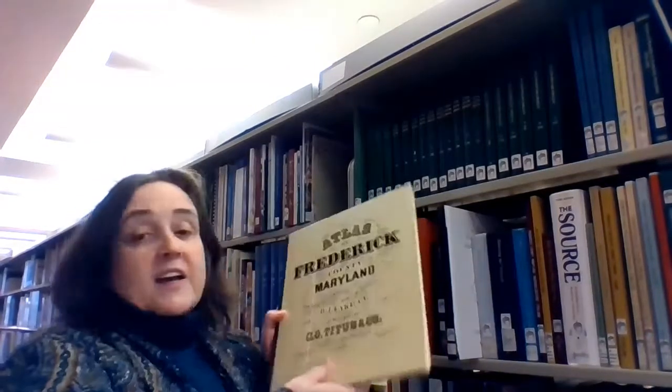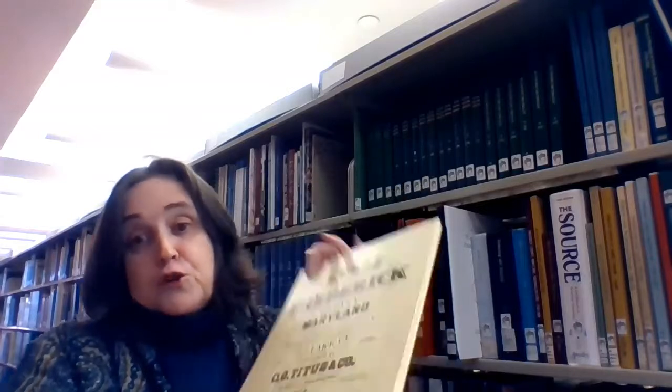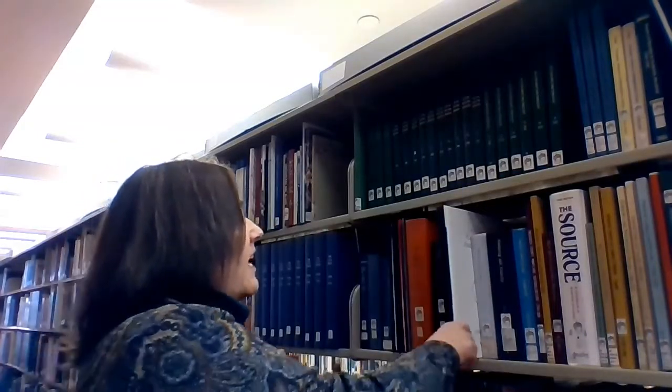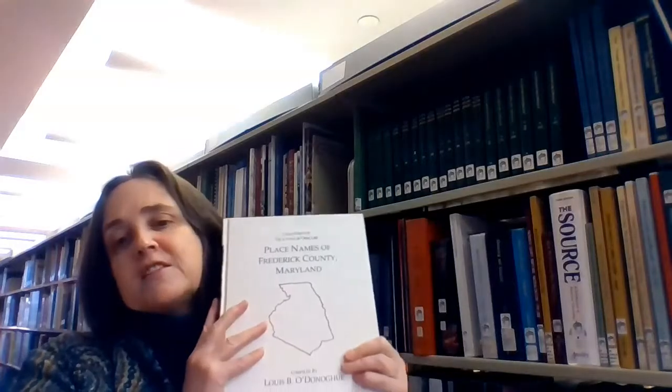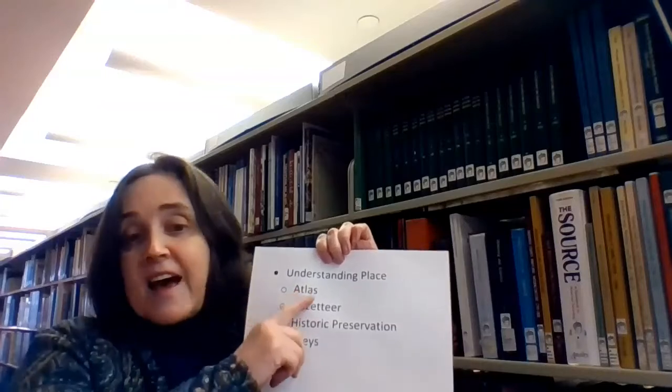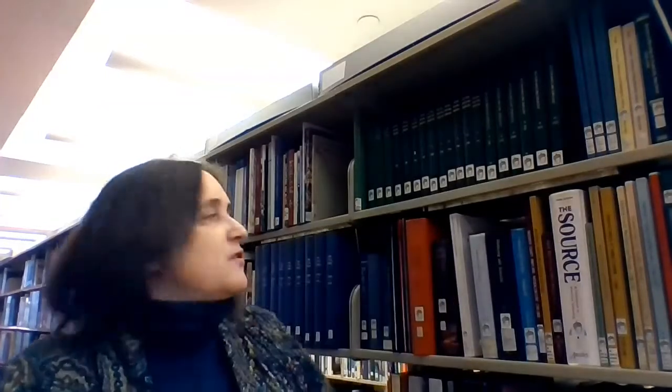And then we have sources that help you to understand place. So we have a reprint of the 1873 Titus Atlas, which can be really important. It shows land ownership in the mid 19th century. And then we have a Gazetteer, a place name index done by a former Maryland volunteer, Louis O'Donoghue. This can be particularly handy if you're not from around here and you need to know where's Braddock, where's Indian Cave. He did an excellent job pulling together all these sorts of place names that can help you figure out exactly what's being referenced in other sorts of documents.